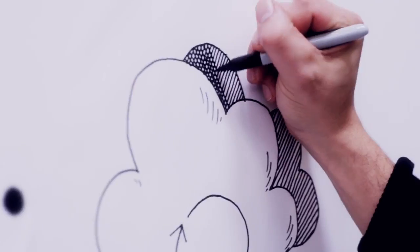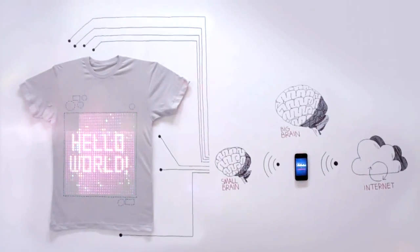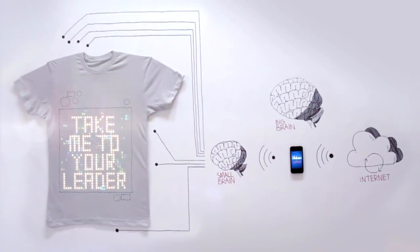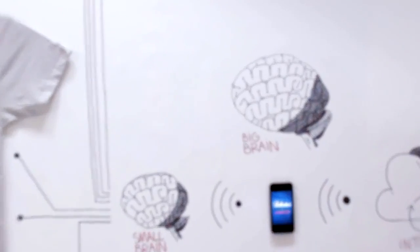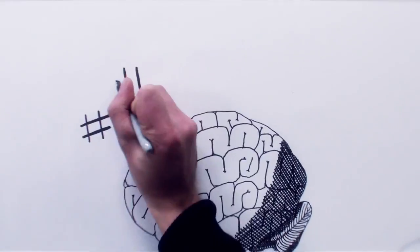Connect that to the Internet. And we have T-Shirt OS. So let's think of some stuff to do. Start simple. Connect the T-shirt to Twitter. Display tweets.